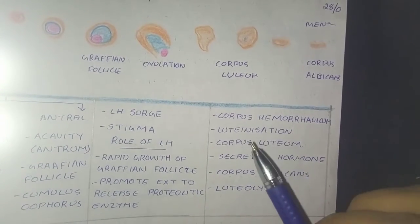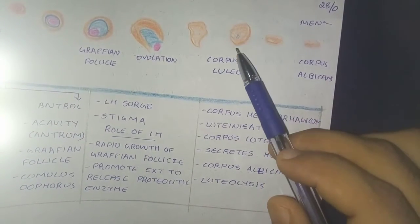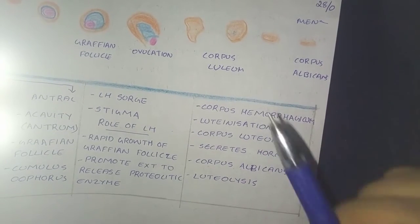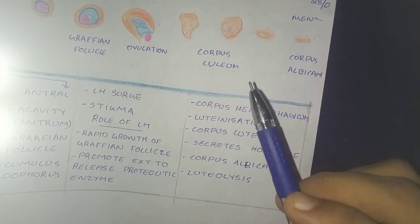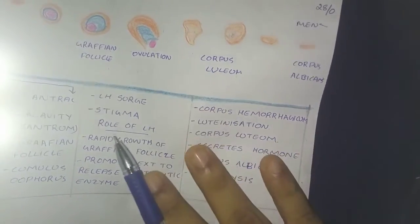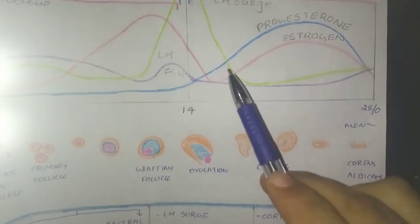The structure formed is known as the corpus luteum, and it secretes some hormones known as estrogen and progesterone, inhibin and relaxin. Estrogen and progesterone have been shown here, that is progesterone going up and estrogen is also going up.